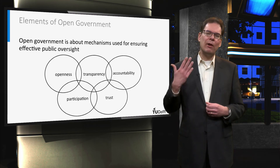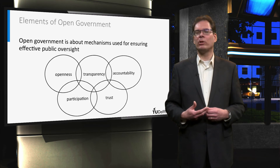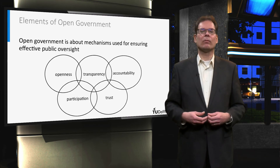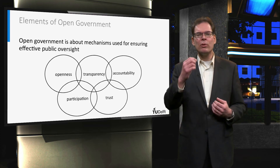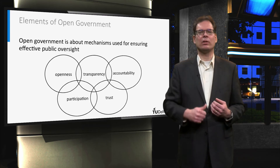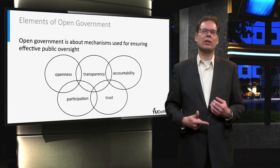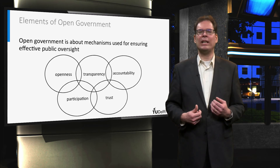All those efforts should result in trust in the government, although that might not always be the case. Although the relationship is much more complex, please remember at the basic level that openness is necessary for creating transparency. In turn, transparency is a key condition for accountability. Citizens' engagement is necessary for effective oversight.